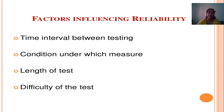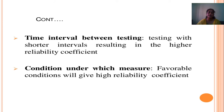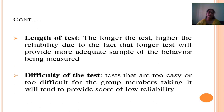Factors Influencing Reliability: time interval between testing, condition under which measured, length of test, and difficulty of the test. Testing with shorter intervals results in a higher reliability coefficient. Favorable conditions give a high reliability coefficient. If the test is conducted over a longer period, it will yield more reliable data from the samples. Tests that are too easy or too difficult for the group members tend to provide a high score of low reliability.